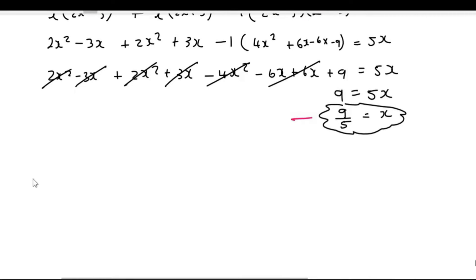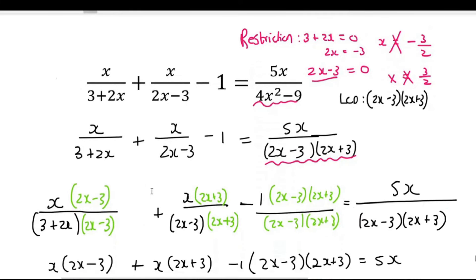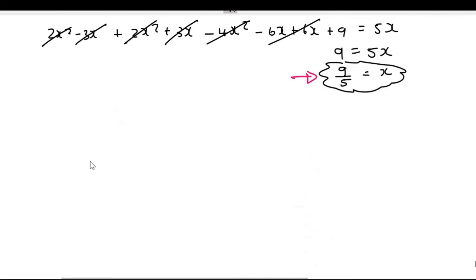So luckily, this answer is not equal to any of the restrictions. And so we are okay. We don't have any problems happening here. And so the final answer is 9 over 5.